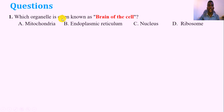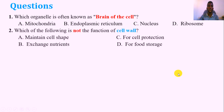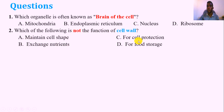Which organelle is often known as the brain of the cell? A. Mitochondria. B. Endoplasmic reticulum. C. Nucleus. D. Ribosome. Question number two: Which one of the following is not a function of the cell wall? A. Maintains cell shape. B. Exchange nutrients. C. Important for cell protection. D. Important for food storage.